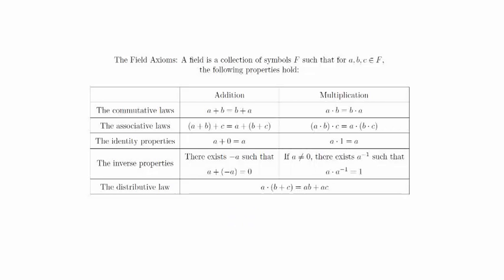It turns out that every other algebraic property of numbers that you've used can be derived from these. For example, you might notice that there's no axiom that states A times 0 equals 0 for all real numbers, or that a negative times a negative is a positive. We will use the field axioms to prove the first property.